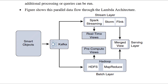You can use Kafka as the message broker. Using Lambda architecture, you can divide the stream layer and batch layer. For the stream layer, you can use Spark Streaming, Storm, and Flink. For the batch layer, you can use Hadoop.